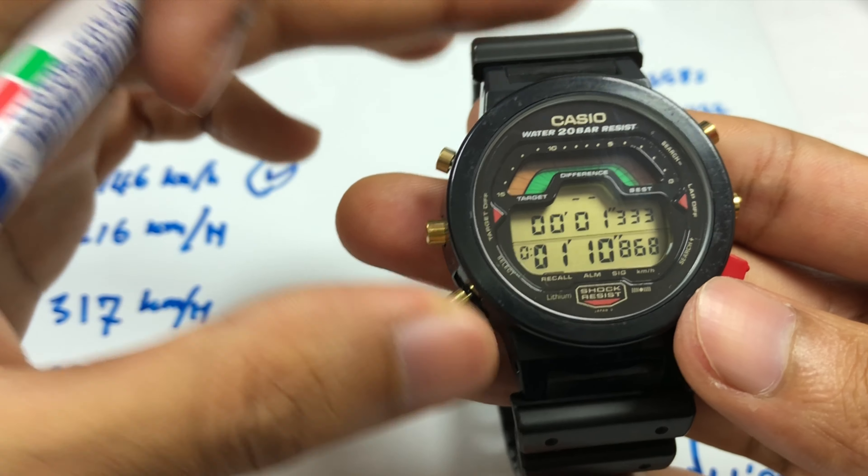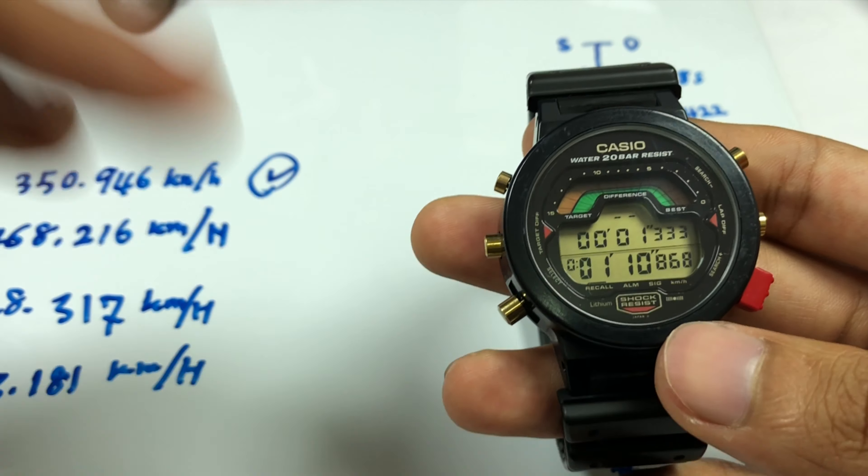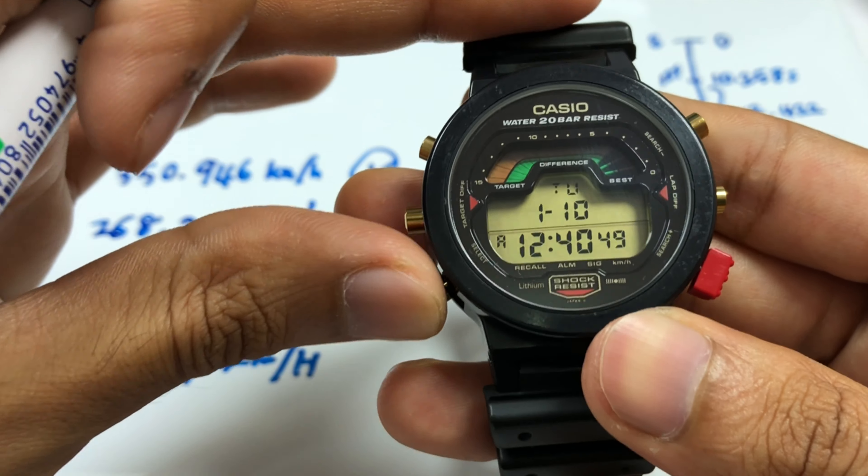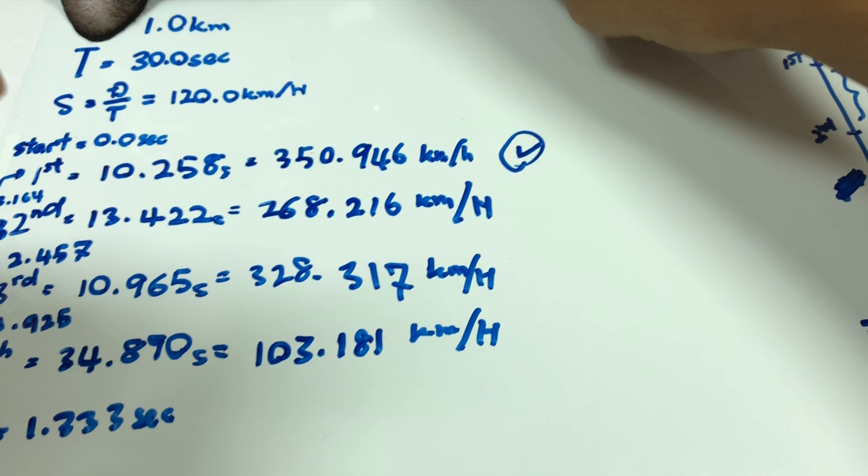You can store up to 10 units. If you exceed that amount, it will erase the first one and keep repeating itself. That is all you have in this chronograph function for this G-Shock watch.